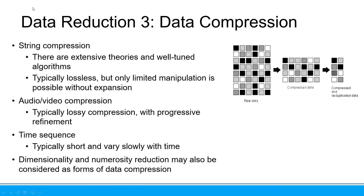This section is discussing the other type of data reduction. So until now we already have 2 data reduction techniques. The first is dimensionality reduction — it is to reduce the column. And numerosity, to reduce the rows. Now we will learn about data compression.